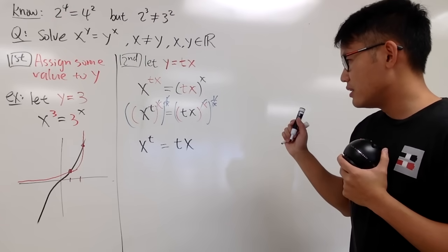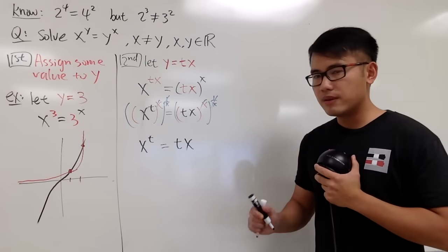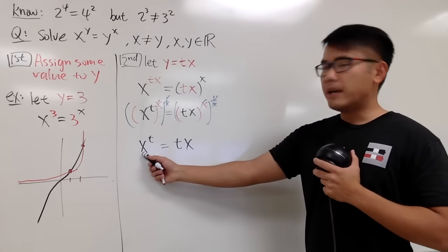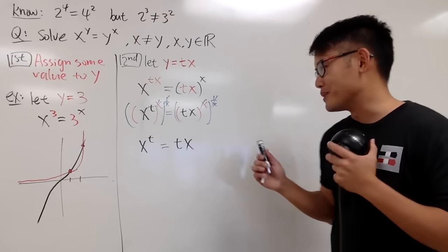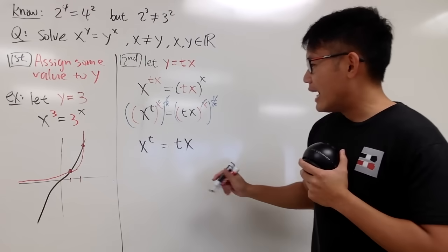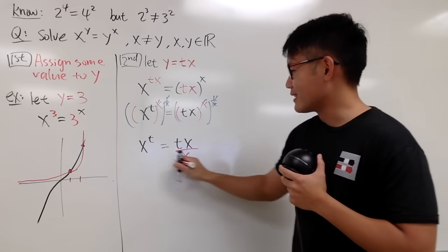How can I get the x by itself? x is the base right here. Shall we do logarithm? You can try, and let me know how it goes. I'm not going to do it, because I am going to just divide both sides by x.